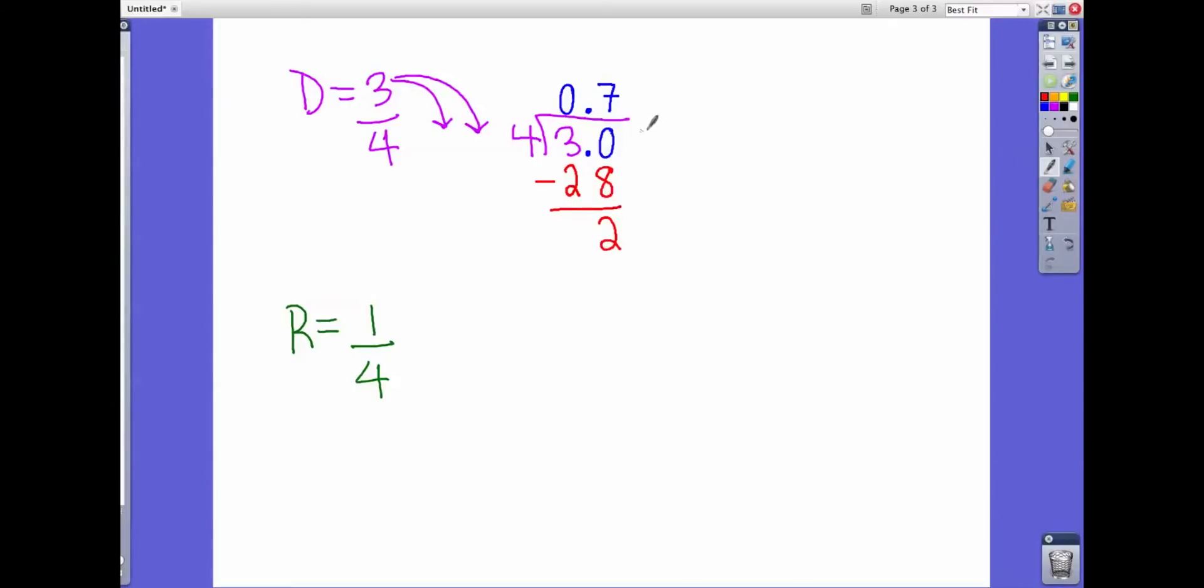Now there's no more zeros up here, so we have to put in another zero and bring it down. In this case, we have two zero, which makes 20, and four goes into 20 five times. And four times five is 20. And we end up with zero. So we know that the answer is 0.75.